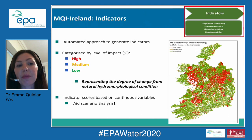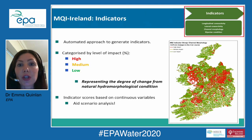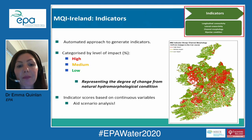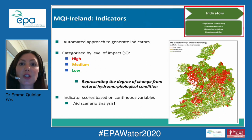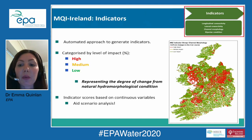As the MQI Ireland tool is carried out at a national level, we took an automated approach to generate these indicators. They are categorized by level of impact — high, medium, low — so we have a traffic light system you can see on the map. The level of impact represents the degree of change from natural hydromorphological condition. Indicator scores are based on continuous variables so we can detect changes no matter how subtle, which aids scenario analysis when looking at impacts from proposed developments and river restoration.